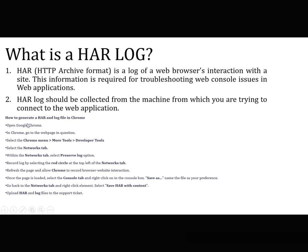The process of generating a HAR log file in Chrome: open Google Chrome and navigate to the web page in question. Select the Chrome menu → More Tools → Developer Tools. Select the Network tab, then enable the 'Preserve Log' option. Record the log using the red circle at the top left of the Network tab. Refresh the page to let Chrome record browser-website interaction. Once loaded, go to the Console tab, right-click, and save. Then go back to the Network tab, right-click, and save as HAR with content. Upload the log files to the support ticket.